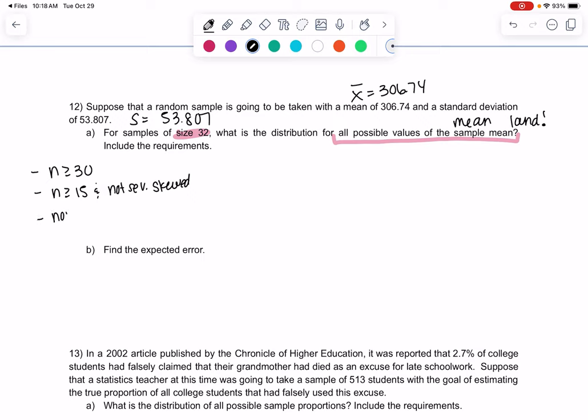Or if it's even smaller than that, then we have to say a normal population, which we don't know. There's nothing mentioned about a normal population, but our sample size is 32, so it's bigger than 30, so we meet the first requirement. Since n is greater than 30, the sample means will be normal. It doesn't mean the original data is normal, it means the sample means will be normal.